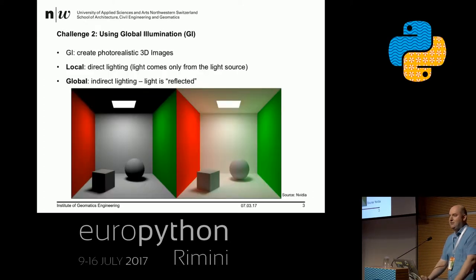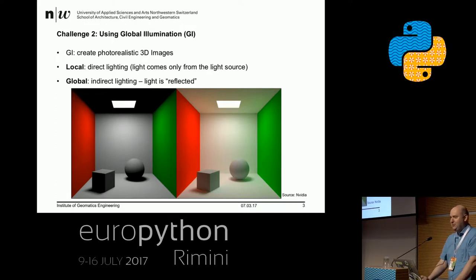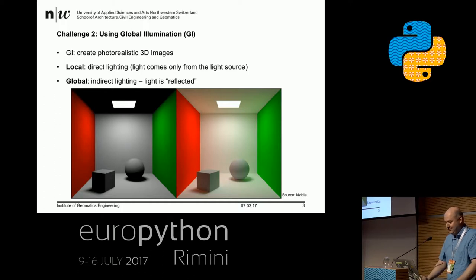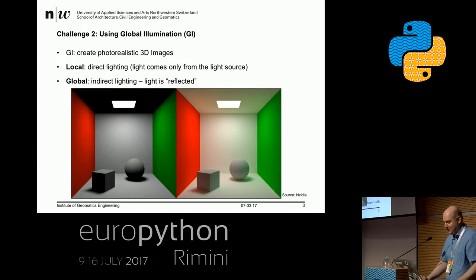The second challenge: I want to have good quality. Good quality means I want to use global illumination. I really don't want the result we see on the left — I want the result on the right. So if you paint your wall green or red, you see on the floor it's also a little bit greenish and reddish. That's global illumination — we really follow the path of light.